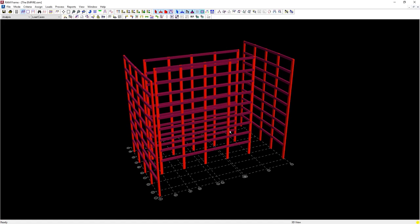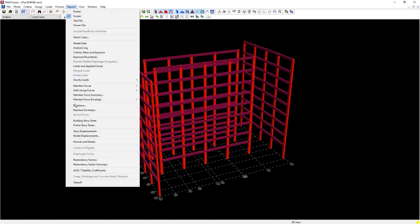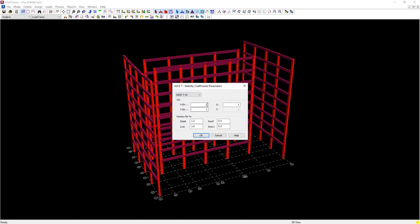Select the ASCE 7 stability coefficient report. This will list the stability coefficient theta, which is the same as the ACI 318 stability index q, when c, d, and i.e. are set to 1.